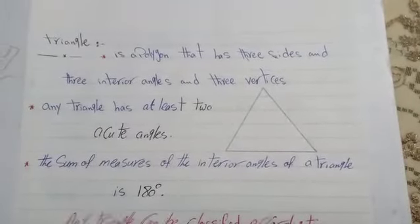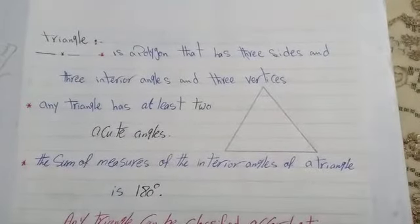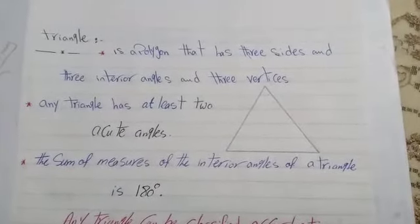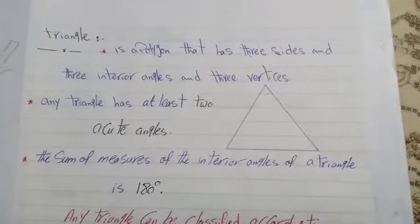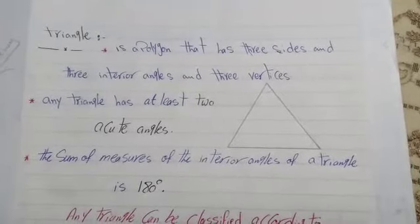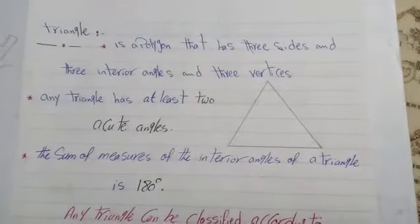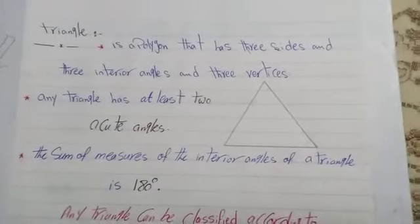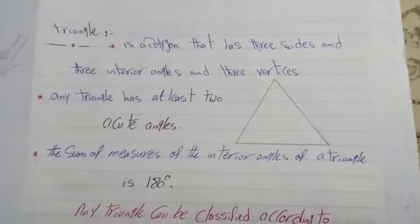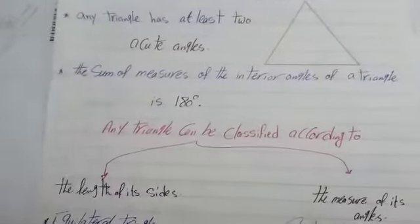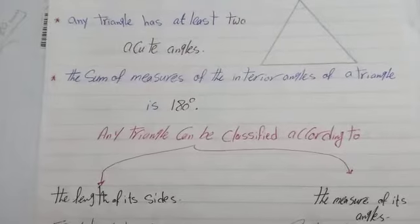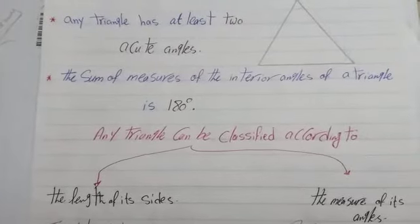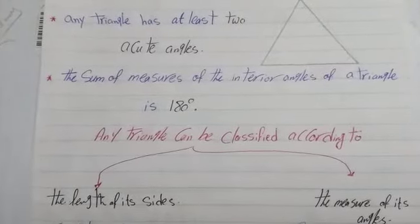Good morning Junior 5. Our lesson today is about triangles. A triangle is a polygon that has three sides, three interior angles, and three vertices. Any triangle has at least two acute angles. The sum of the measure of the interior angles of any triangle is 180 degrees — no more, no less.